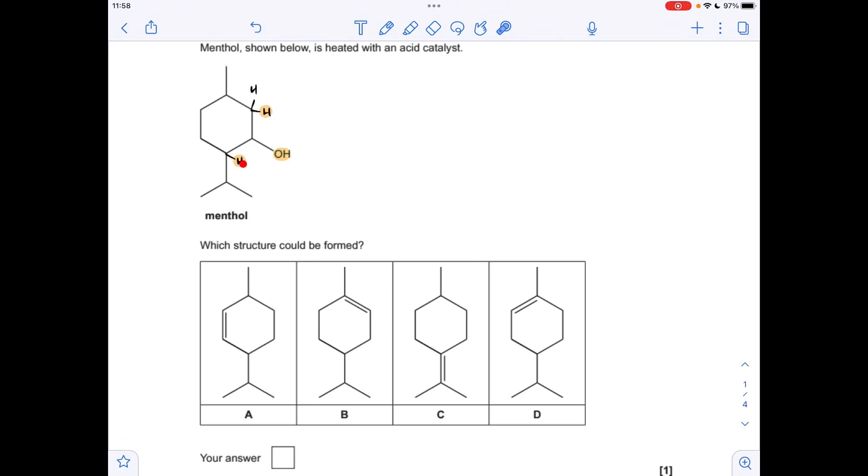We can either take this hydrogen here or one of these here, and what that's going to do is put a double bond here or here. So the two products that could form are going to look like these, and hopefully you appreciate that this one here is A.